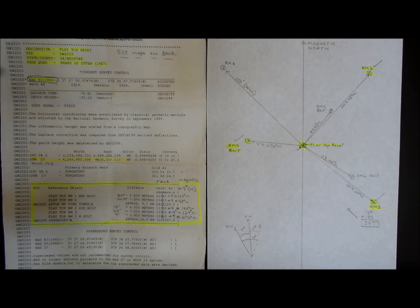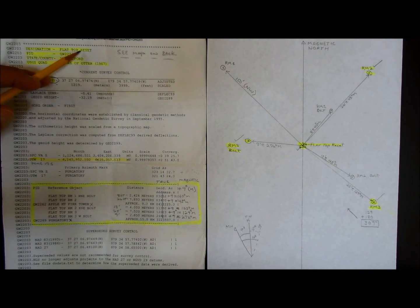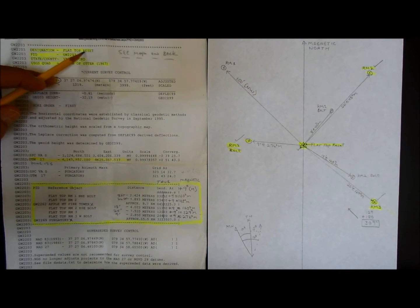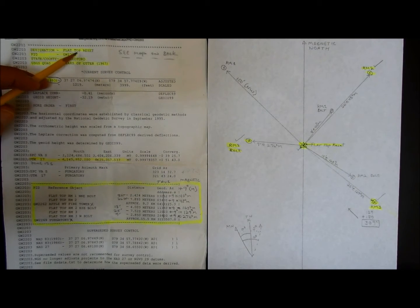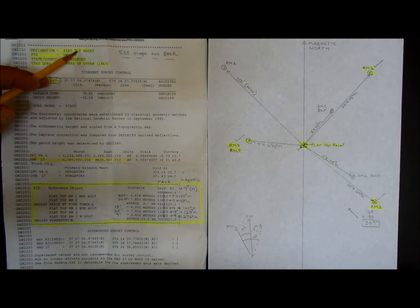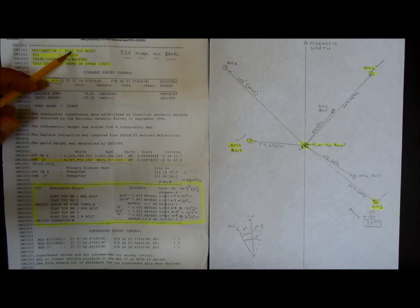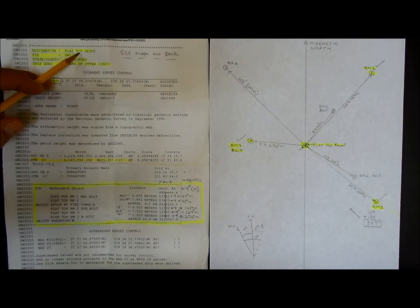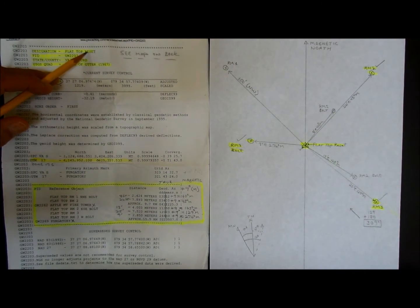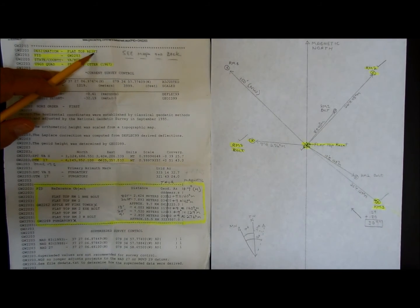This is a typical data sheet from the Coast and Geodetic Survey database. This one is called Flattop Reset. The original would have been called Flattop. Sometimes the benchmarks get damaged or stolen and then they go back and put a new one in and give it the name Reset.